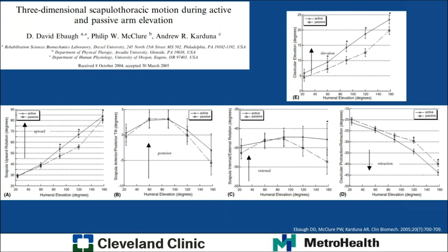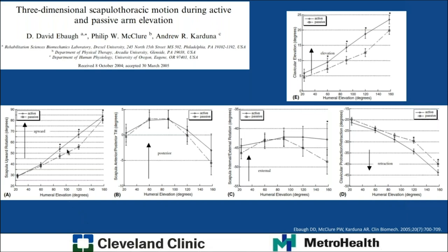Biomechanical data on healthy subjects looked at relative motion of the scapula to the thorax and humerus with shoulder motion, both passively and actively. Active motion is shown in solid lines, passive in dotted lines. Most show little difference between passive and active range of motion, except for scapular internal-external rotation — with active range of motion there's more external rotation compared to passive. The take-home is that the scapula moves in three dimensions with shoulder motion, not just rotating in one plane.